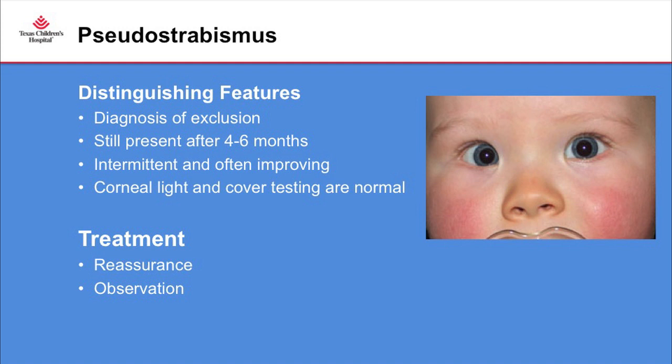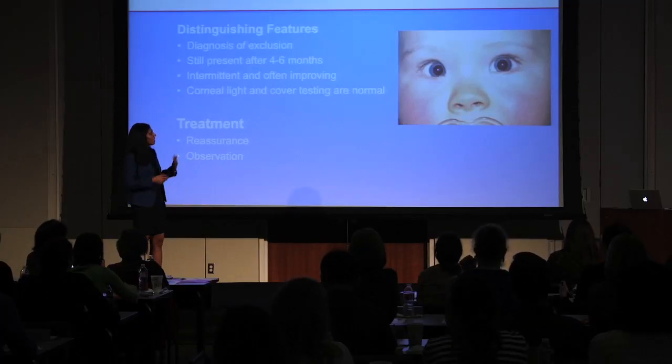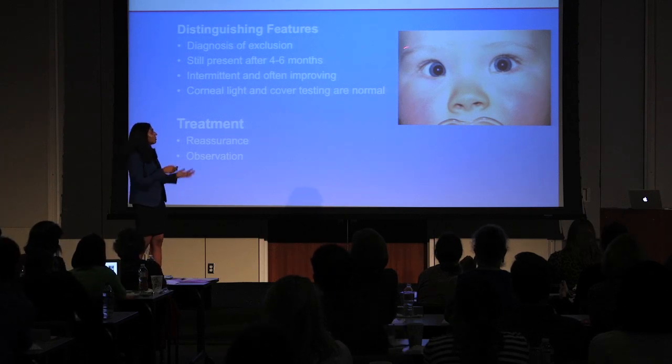The relevance of pseudo-esotropia being present after four to six months is that it helps distinguish it from ocular instability, which should really be gone by then. It is intermittent and often improving — that's what the parents will say in the history — which helps differentiate it from infantile esotropia, which is not typically as intermittent, and you don't typically hear that it's improving. Corneal light and cover testing are normal: the light reflexes are centered and if you cover either eye there would be no shift in the uncovered eye.